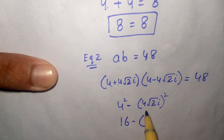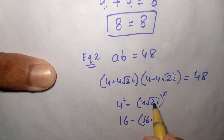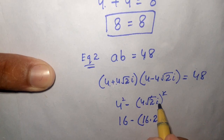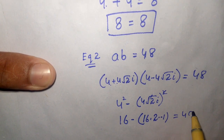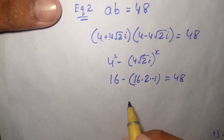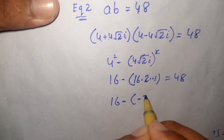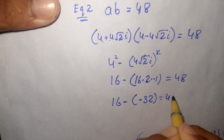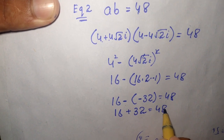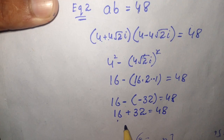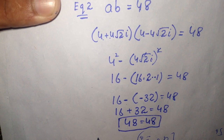Now 4 squared is 16. For the second term: (4 square root of 2 i) squared equals 16 times 2 times i squared. Since i squared equals minus 1, this becomes 16 times 2 times minus 1, which equals minus 32. So we get 16 minus (minus 32), which equals 16 plus 32, which equals 48. The left hand side equals 48 and the right hand side is 48, so equation 2 is also verified.